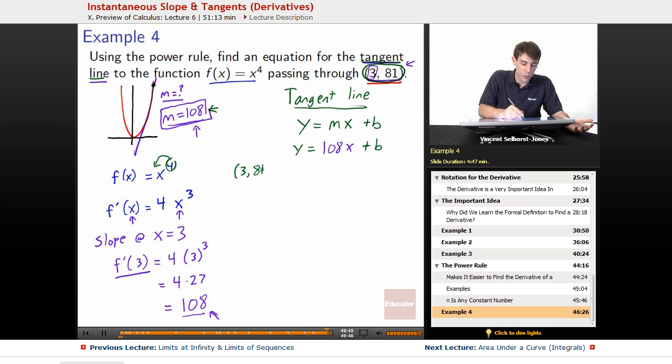So, we can plug in the point 3 comma 81 because we know that our tangent line has to pass through the one point that it barely, barely just feather touches on that curve.